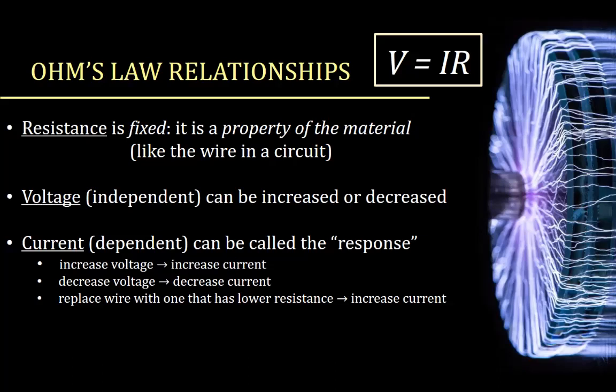Resistance, unlike resistivity, is fixed — it's a property of the material, like the wire in a circuit. Voltage is independent and can be increased or decreased, while current is dependent and adjusts to reflect the other two. If you increase voltage, current increases. If you decrease voltage, you decrease current. If you replace a wire with one that has lower resistance, you increase the current. Through Ohm's law, we can learn a lot about how to construct the most efficient circuit.